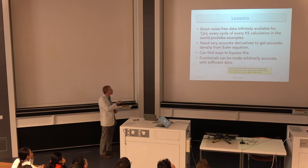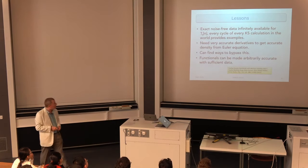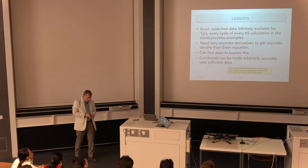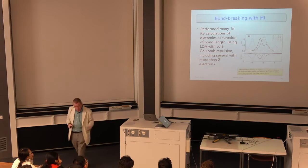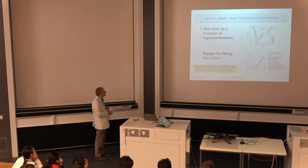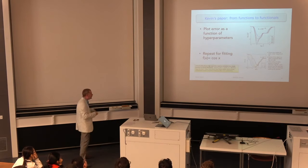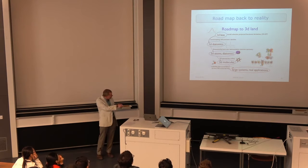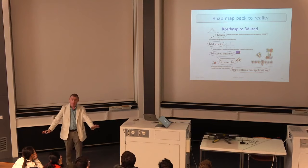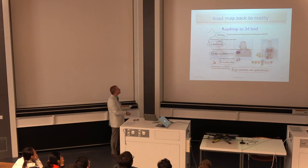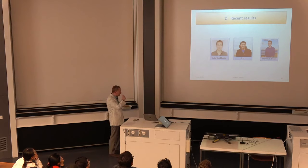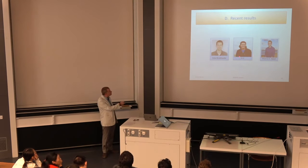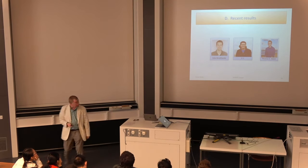We found a way to bypass that issue and achieved chemical accuracy, finding densities self-consistently. That proved the principle. We also did bond breaking in 1D systems and showed our functional worked there — retraining it for each problem. The most recent results come from Felix Brockherde, who is graduating this month with Klaus in Berlin; Li Li, who graduated a year ago and now works at Google; and Thomas Baker, who shared supervision with Steve White and does DMRG calculations.